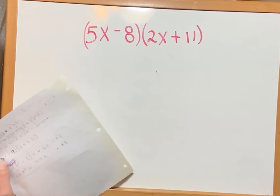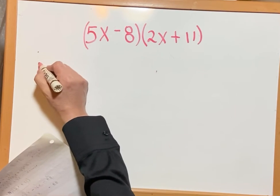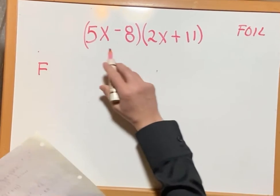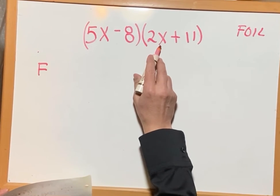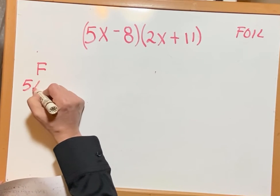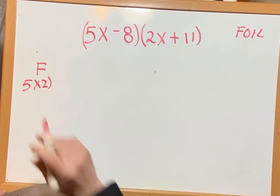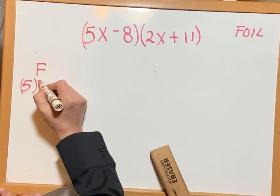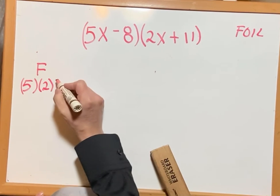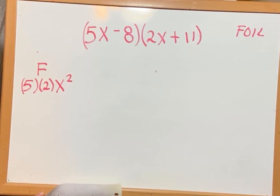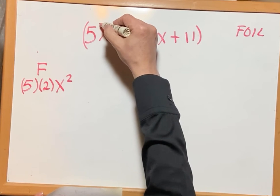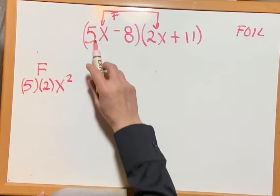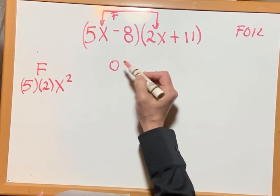Okay, let's do the first — we need to multiply. F for the first terms: 5x times 2x, that means 5 times 2. Remember, you can write parentheses — 5 times 2 times x squared. Yes, you can write it directly as 10x squared.